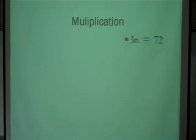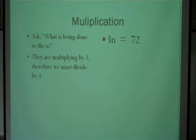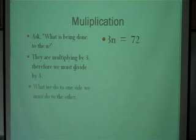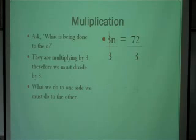Let's do another one. 3n equals 72. What is being done to the n? We're multiplying n times 3. Since we're multiplying by 3, we have to do the opposite to get rid of it, which is divide by 3. What we do to one side, we must do to the other. The two 3s cancel out, leaving just n, and 72 divided by 3 equals 24.